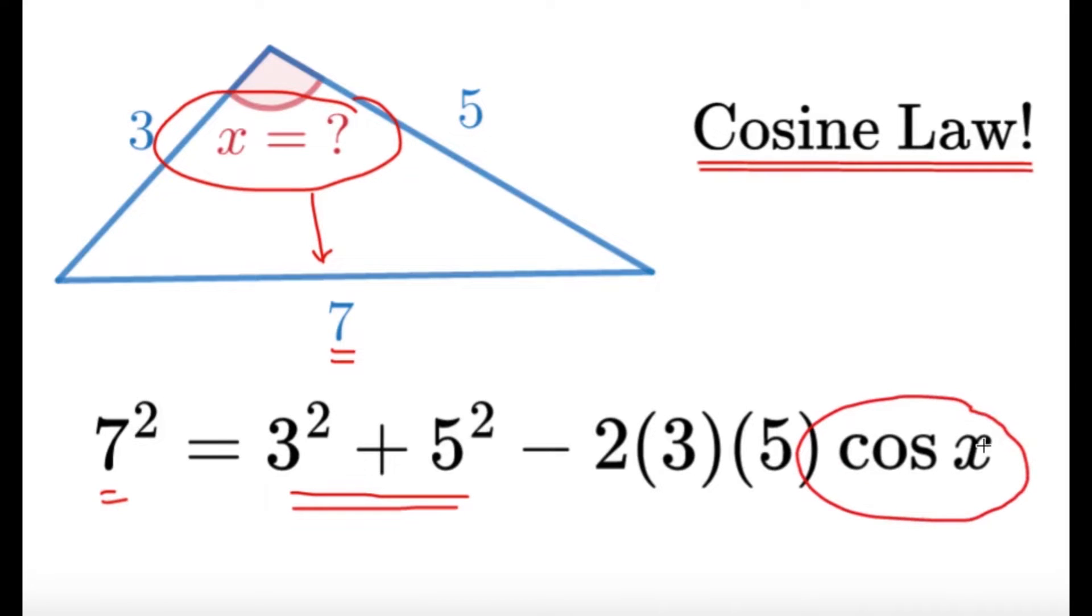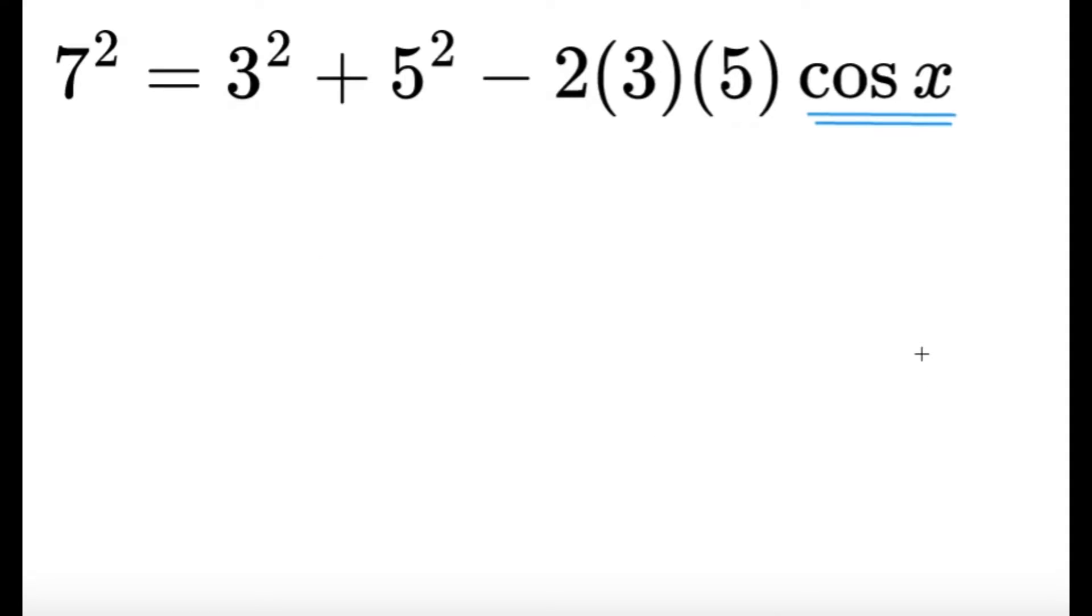So all you have to do is try to get cosine x first. And hopefully one of the five choices is going to tell us which one it is. So to get cosine x, we just have to simplify a lot of things here.